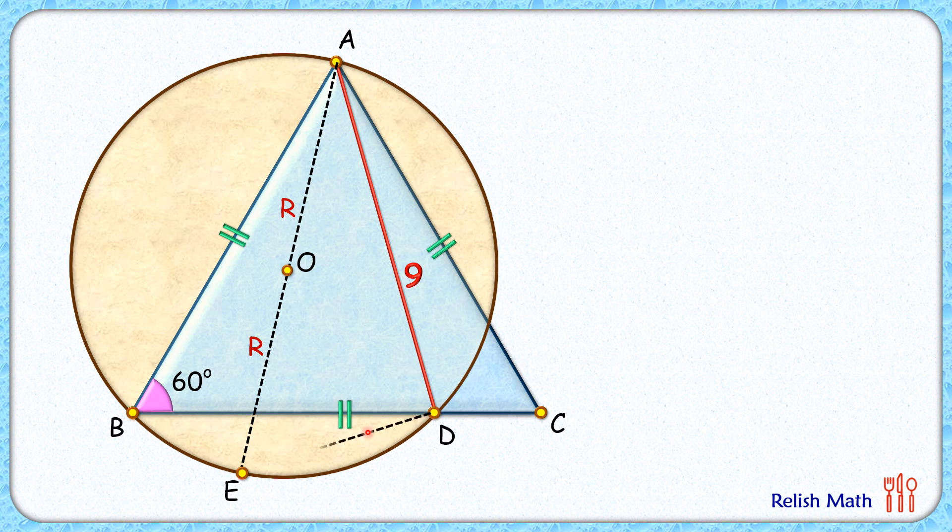Let's join DE. Now in the circle, AD is a chord which is sustaining a 60 degree angle at point B, and thus by theorem it will sustain the same angle at the remaining part of the segment, so the angle at point E will be 60 degrees.